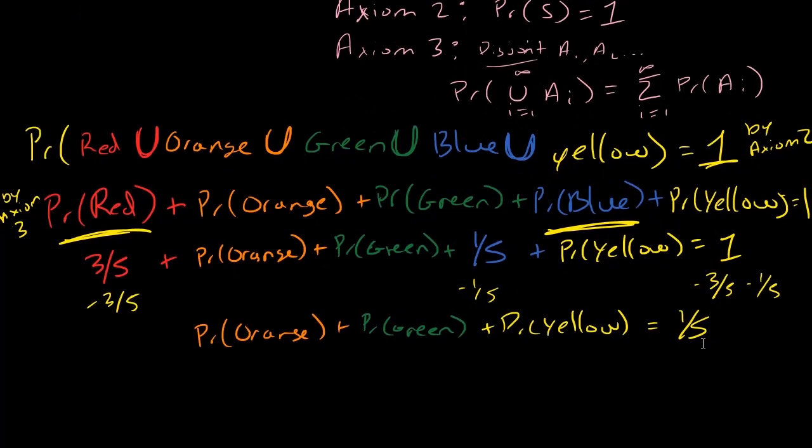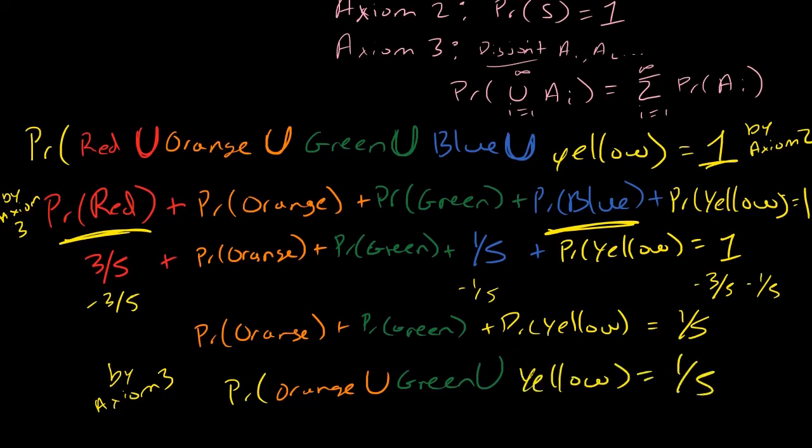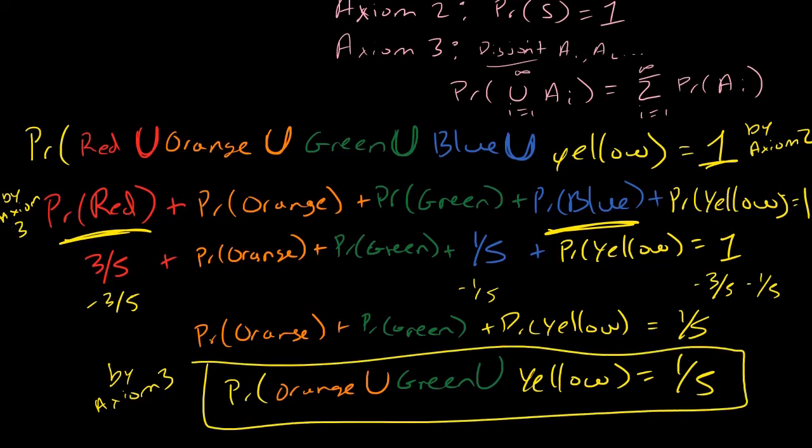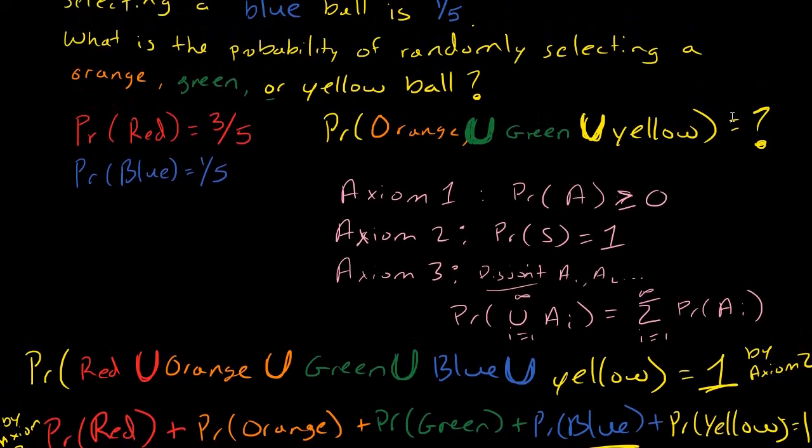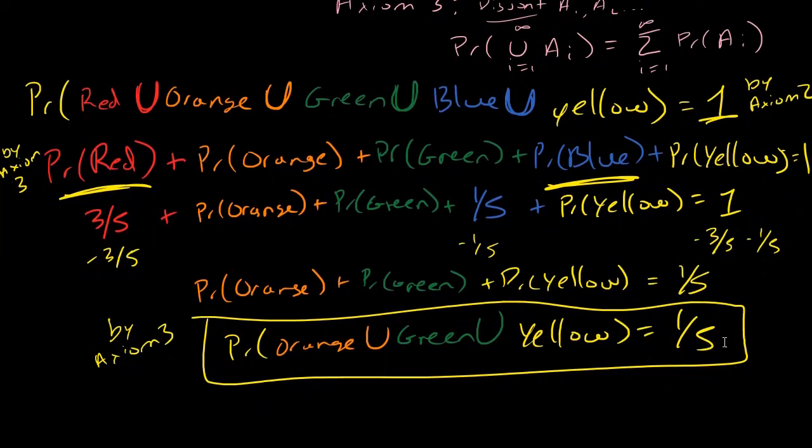Now again, by axiom 3, I can go in the other direction and say that the sum of these probabilities is the same as the union, because they are disjoint events. So this is the probability of orange union green union yellow, and that equals 1 fifth, which is what the question was asking. We've determined it is 1 fifth.